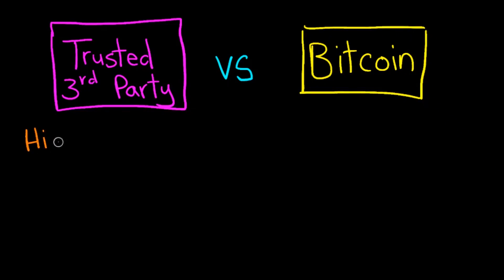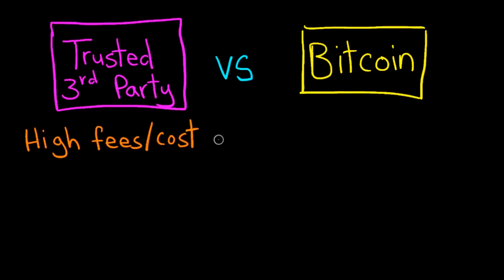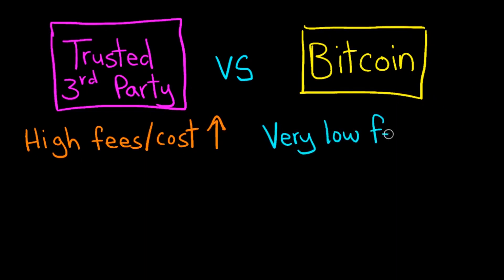With a trusted third party, you have high fees and costs, especially when you have to send money across different countries. In Bitcoin, there are minimal fees in the system.